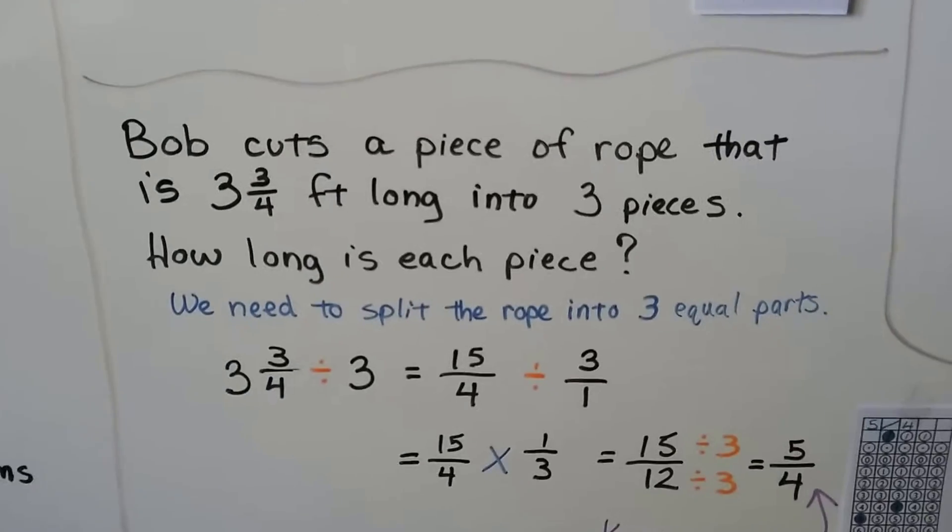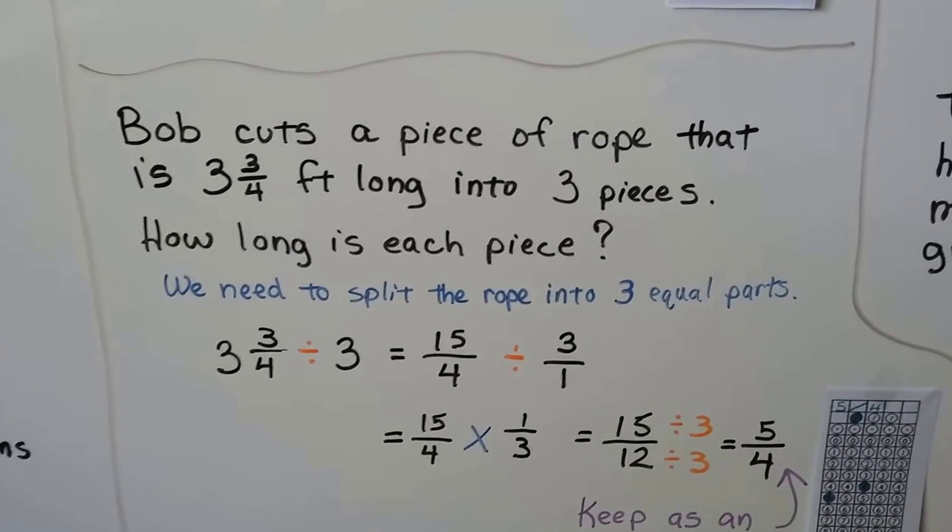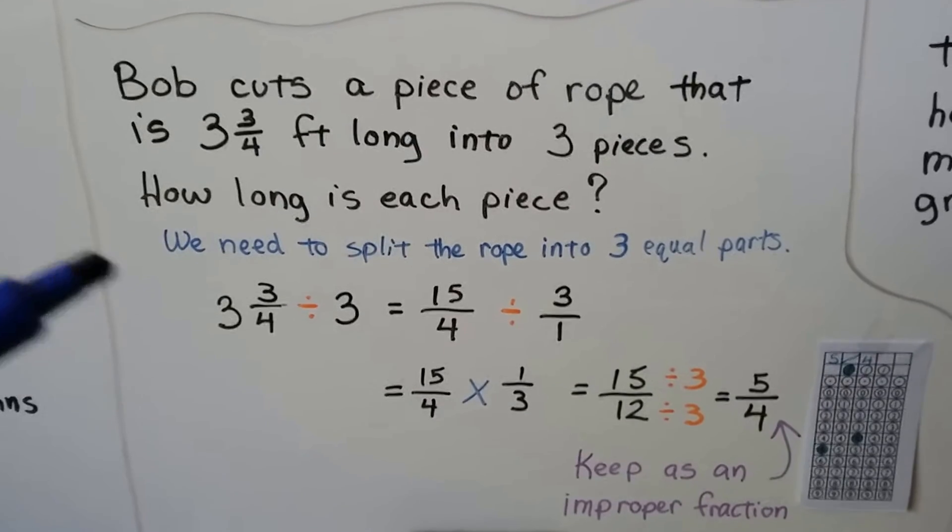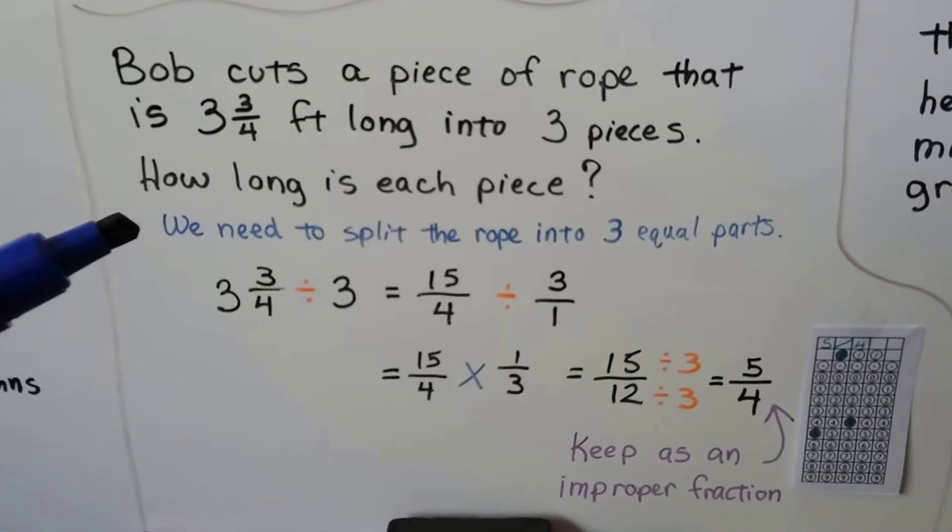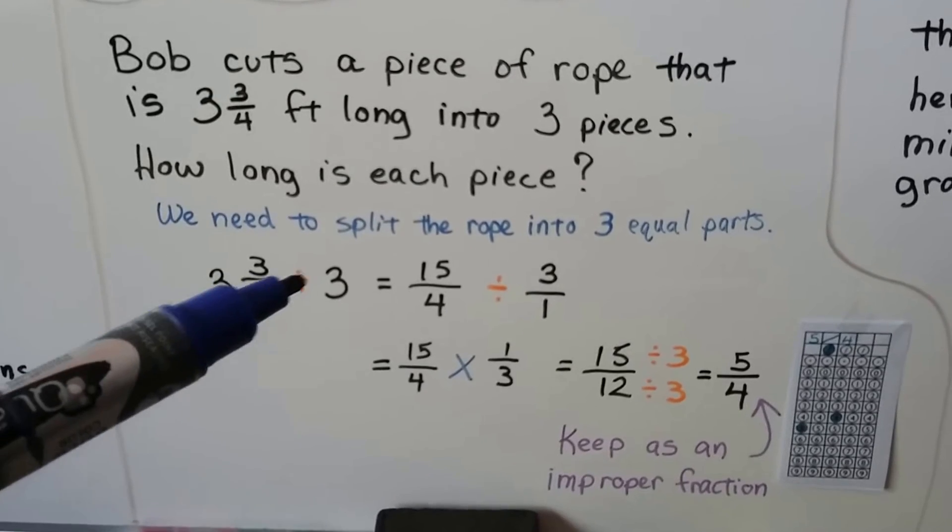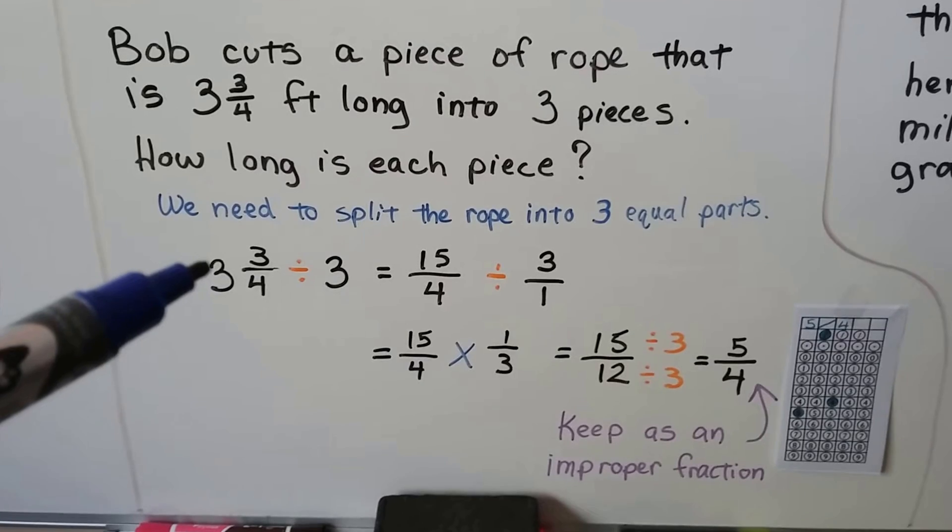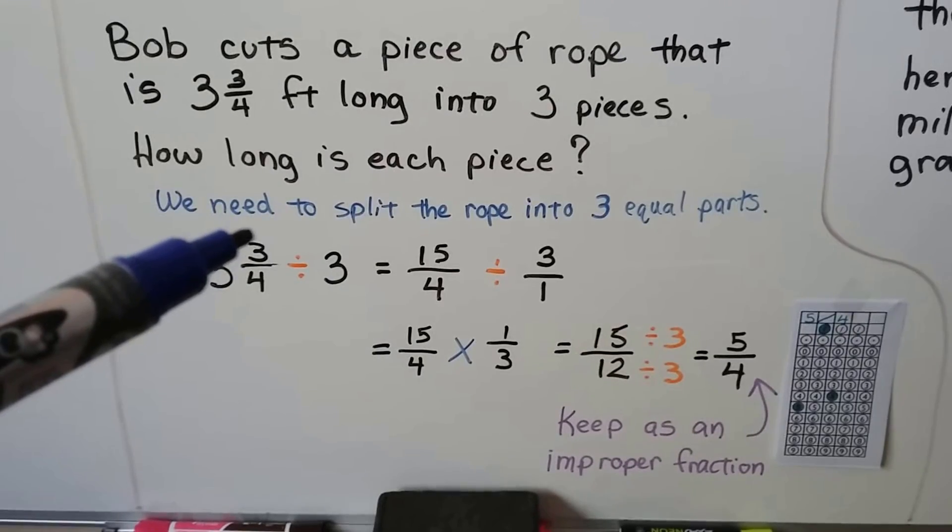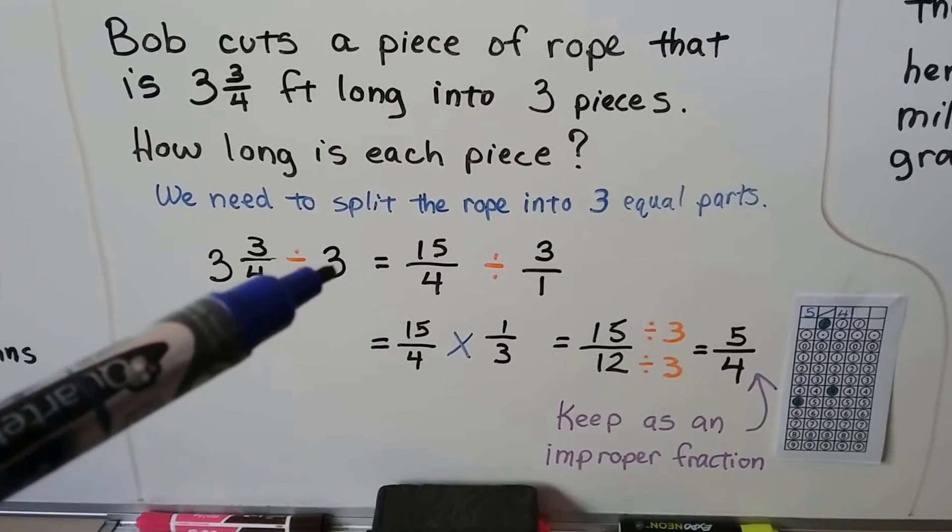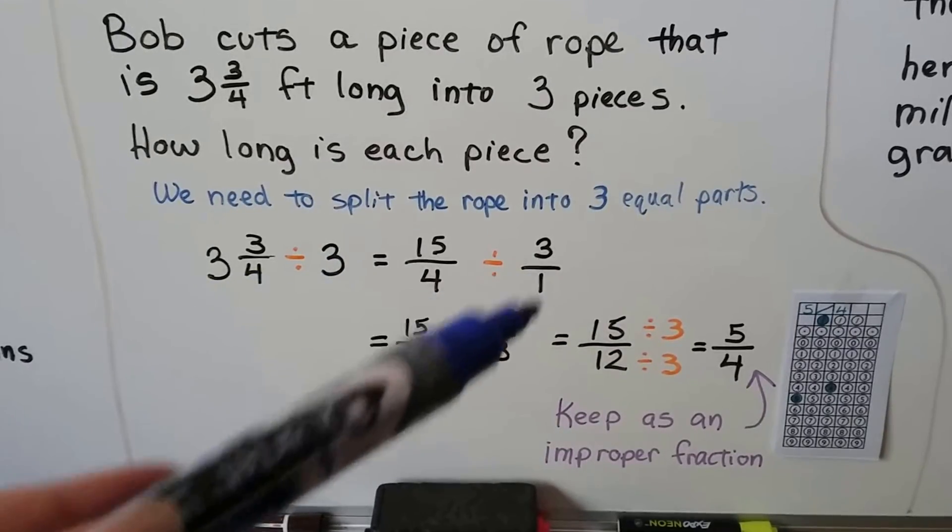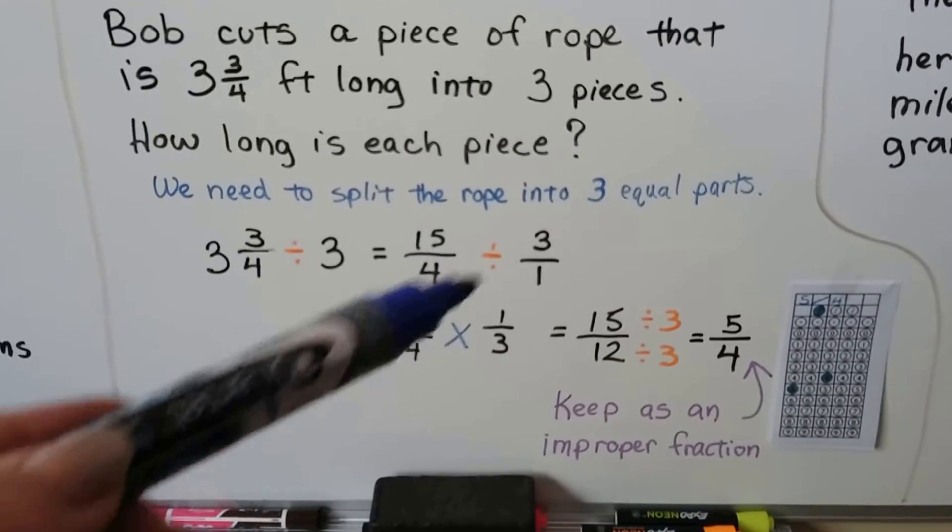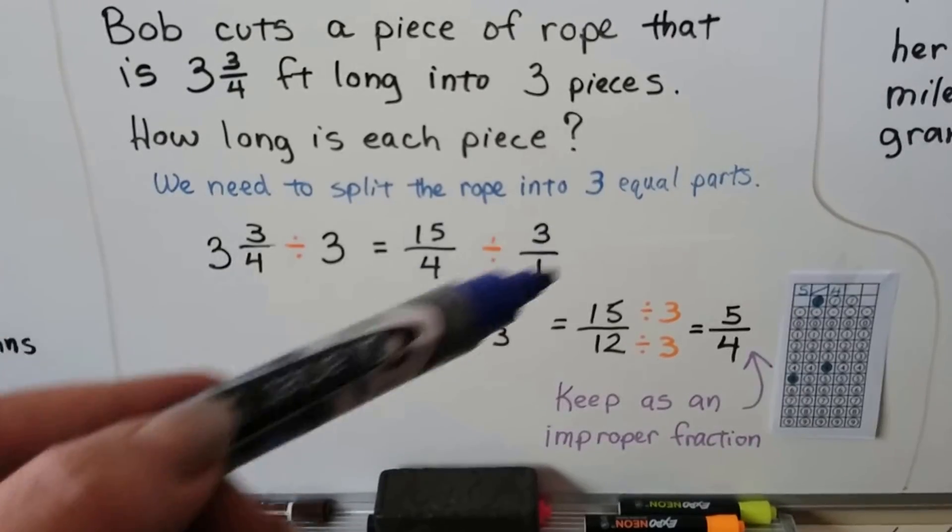Let's try another one. Bob cuts a piece of rope that is 3 and 3/4 feet long into three pieces. How long is each piece? We need to split the rope into three equal parts, so that means we're doing division. We do 3 and 3/4 divided by 3. We turn it into an improper fraction. 3 times 4 is 12, plus 3 is 15, over that denominator. We have 15/4s. We can write the 3 as a fraction by putting a 1 as a denominator, and we change that division sign into a multiplication sign and flip him around to his reciprocal. So it's going to be 1/3.